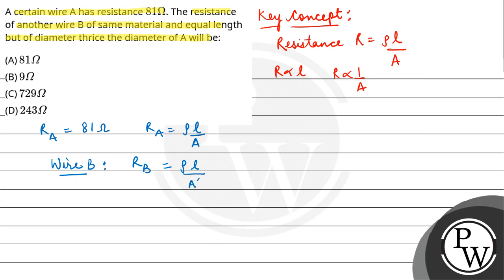Just the diameter is different. That means the cross sectional area is different. So R A is equal to rho L upon pi R square.